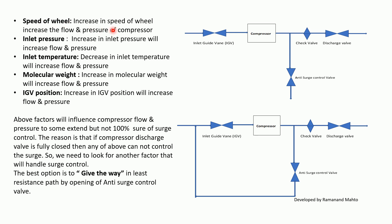Increasing the speed of the wheel increases flow and pressure. Increasing inlet pressure increases flow and pressure. Decreasing inlet temperature increases flow and pressure, and vice versa. Increasing molecular weight increases flow and pressure. Increasing IGV position also increases flow and pressure. Inlet pressure, inlet temperature, and molecular weight are all related to the density of the gas.